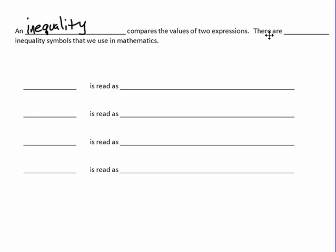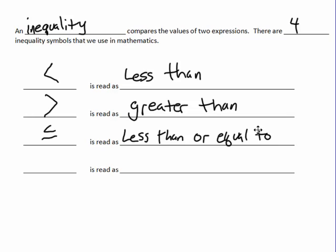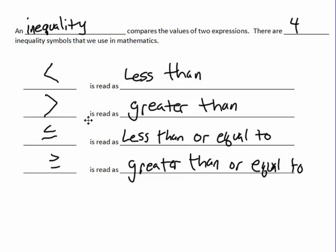There are four inequality symbols that we use. Those symbols are: less than, greater than, less than or equal to, and greater than or equal to. So we have those four: less than, greater than, less than or equal to, and greater than or equal to.